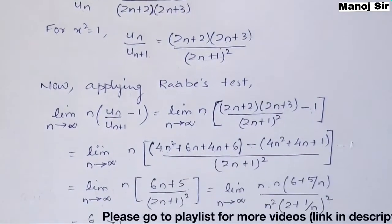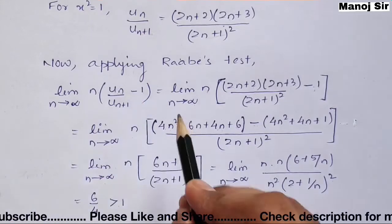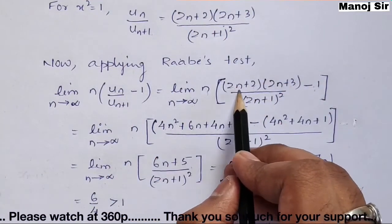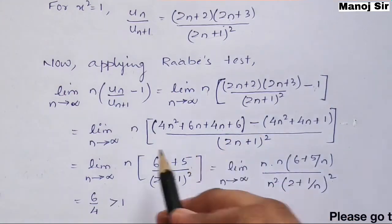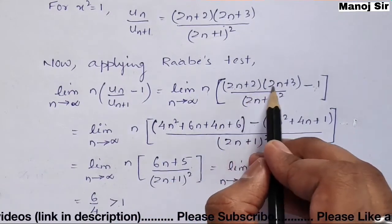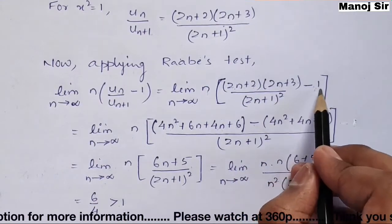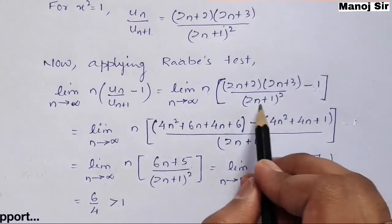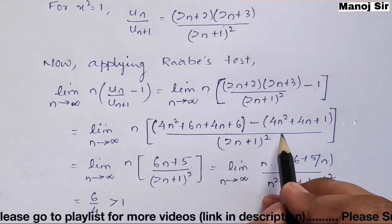Applying Raabe's test, we compute: limit as n → ∞ of n · (un/un+1 − 1) = limit as n → ∞ of n · [(2n+2)(2n+3) / (2n+1)² − 1]. Taking LCM, the expression inside becomes [(2n+2)(2n+3) − (2n+1)²] / (2n+1)². Expanding: (2n+2)(2n+3) = 4n² + 10n + 6, and (2n+1)² = 4n² + 4n + 1.